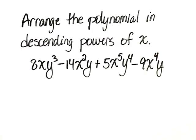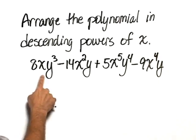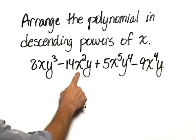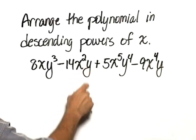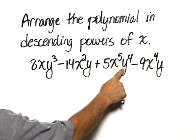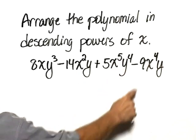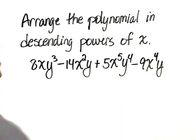Arrange the polynomial in descending powers of x. We have 8xy cubed minus 14x squared y plus 5x to the fifth y to the fourth minus 9x to the fourth y.